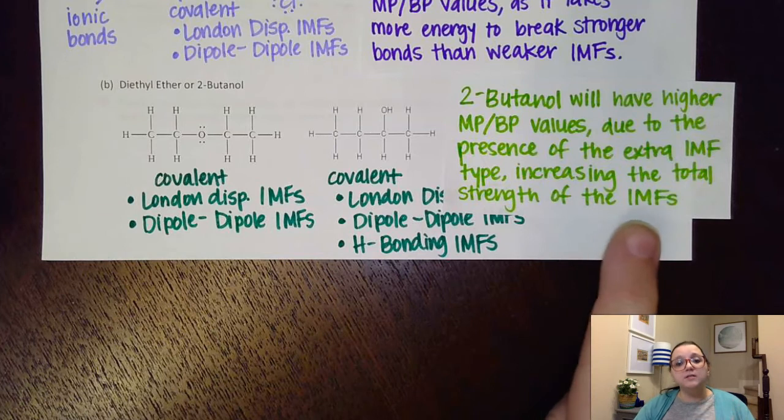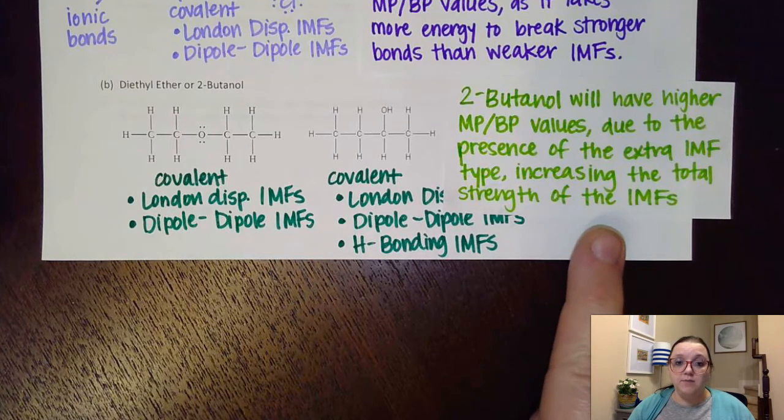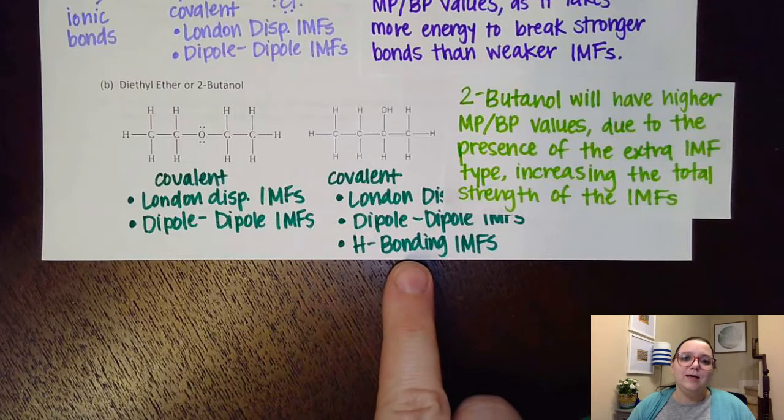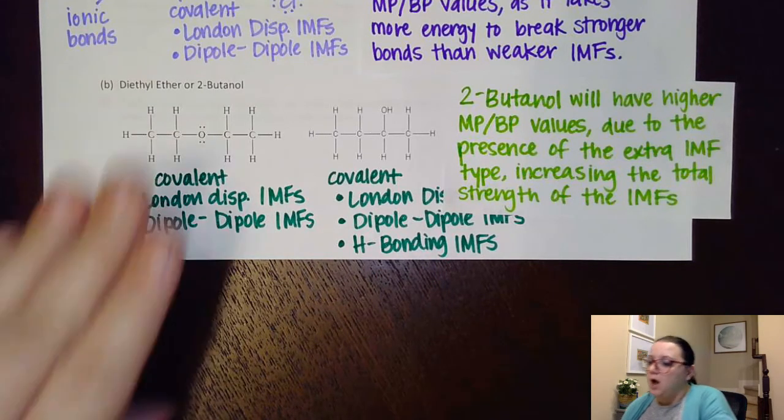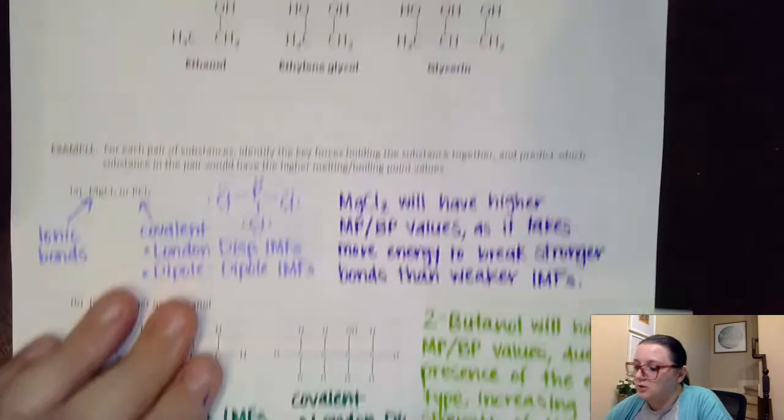Yet this one had that extra intermolecular force type. It had the hydrogen bonding, and so that increases the total strength of the IMFs, especially since the type that we're adding is one of the strongest types. So that definitely helped here. All right. We got one more on the next page to look at.